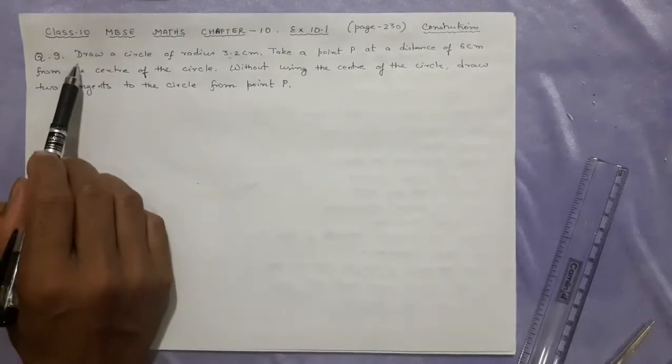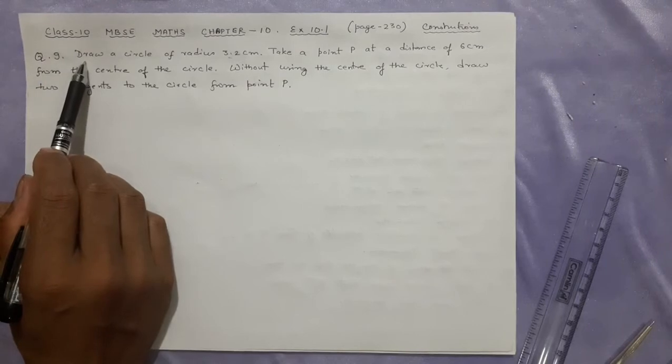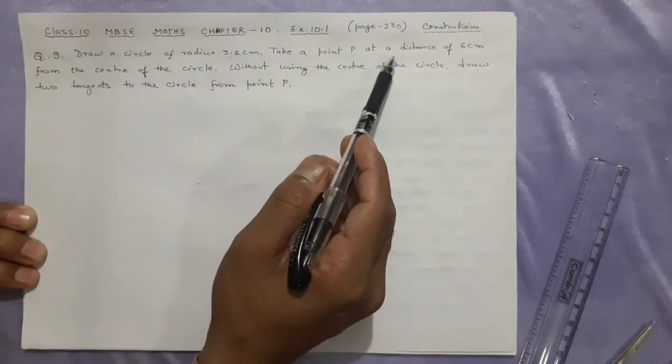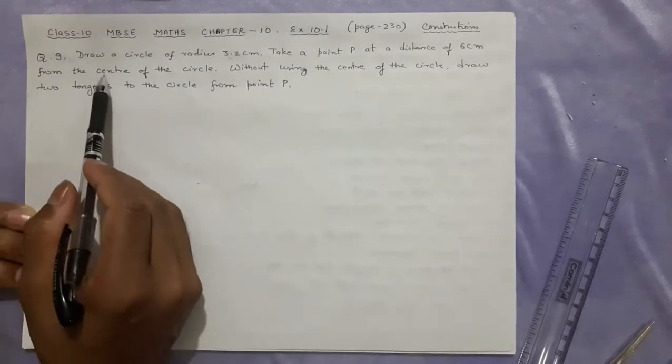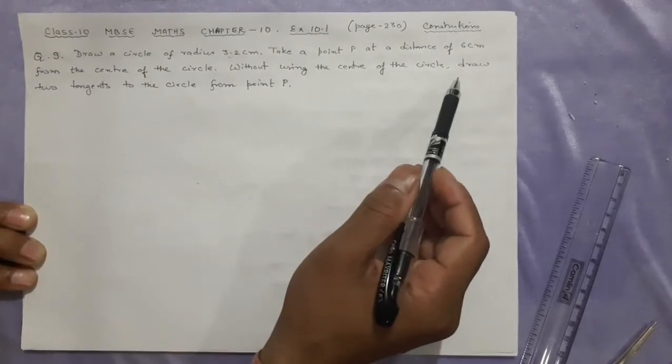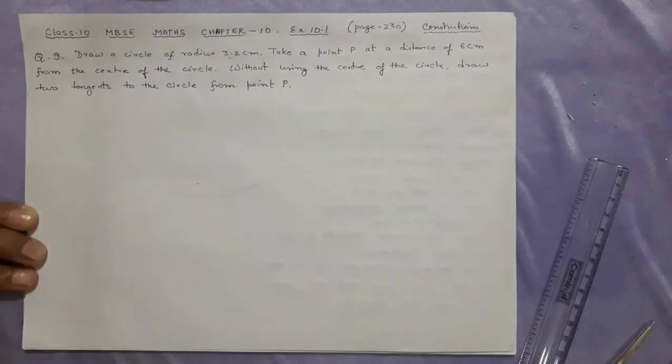Let us see the question. We already have done the construction, this 10.5 construction. Now in the question, we have to draw a circle of radius 3.2 cm and take a point P at a distance of 6 cm from the center of the circle. Without using the center, you are going to draw two tangents to the circle from point P.